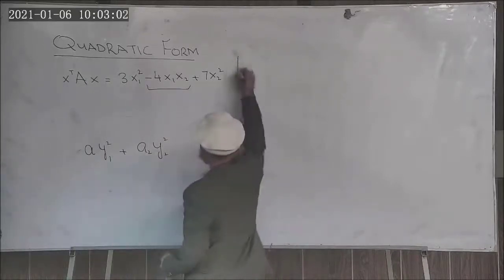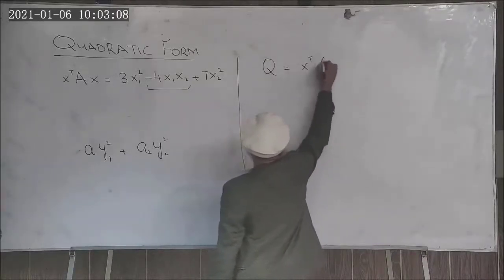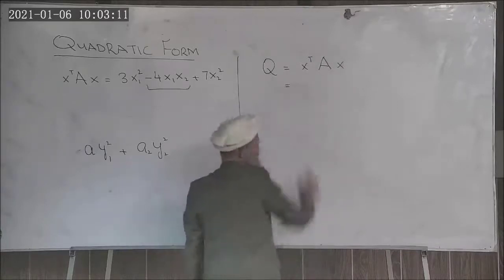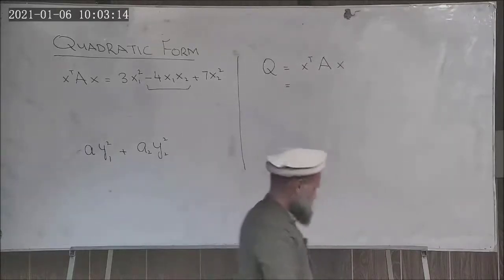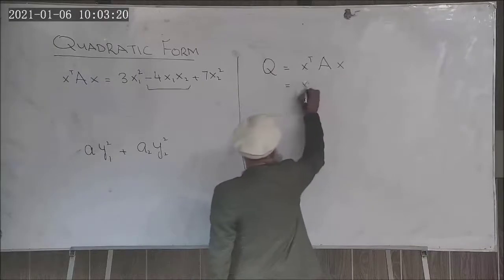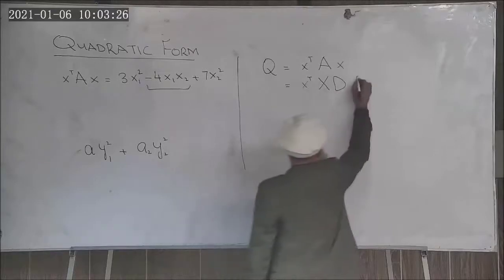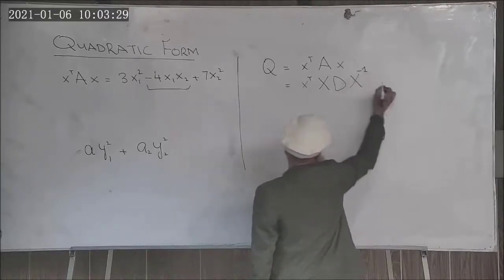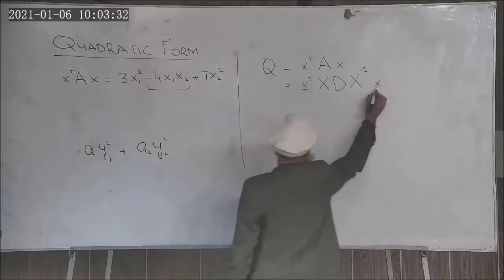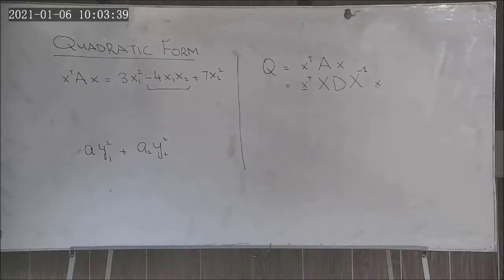For the quadratic expression x^T A x, if this matrix A is diagonalizable, then A equals X D X⁻¹, where D is the diagonal matrix of eigenvalues and capital X is the matrix containing the eigenvectors of A. If we define the transformation y = X⁻¹ x, then x = X y.